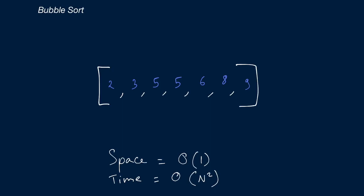The best case O(n) occurs when you're given a sorted array. If we applied bubble sort on an already sorted array, we'd traverse it once — compare 2 and 3, 3 and 5, 5 and 5, 5 and 6, 6 and 8, 8 and 9 — all in correct order. Then we'd ask: did we perform any swaps? No. So we're done — that was just O(n) time. But that only happens with a pre-sorted array; otherwise on average and in the worst case it's O(n²).